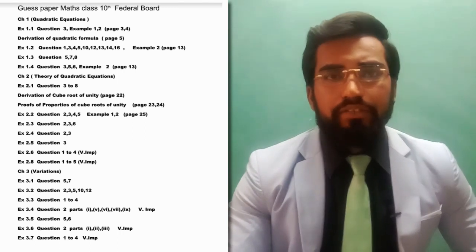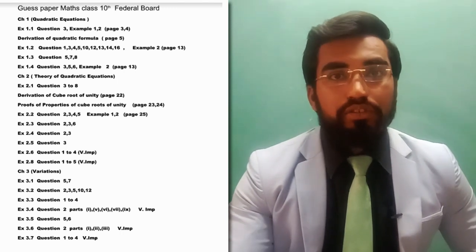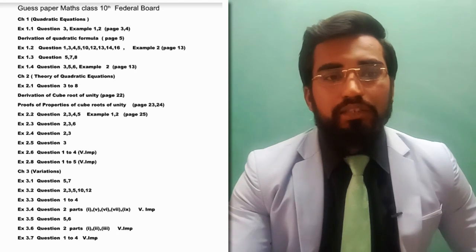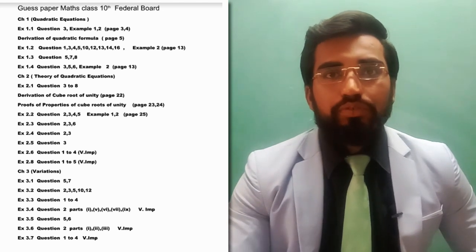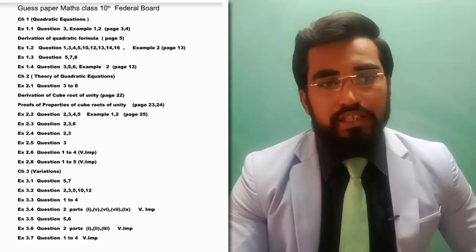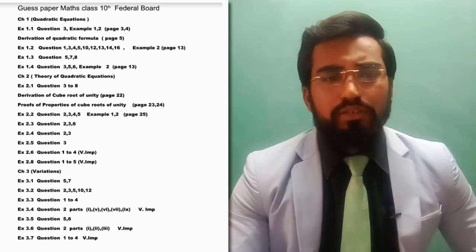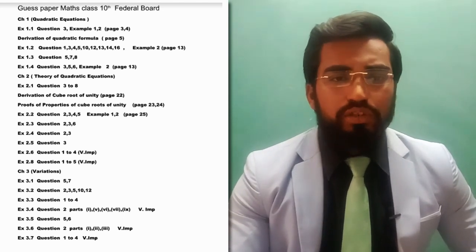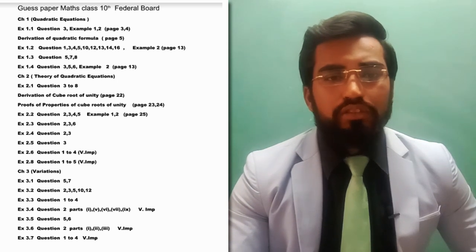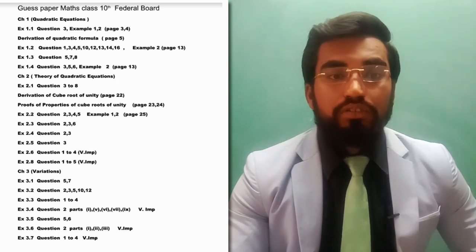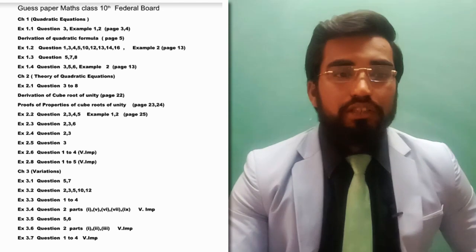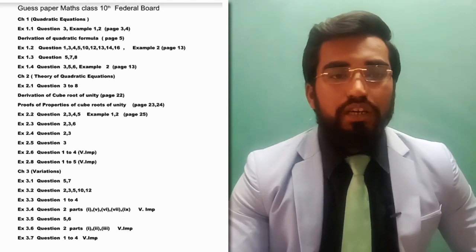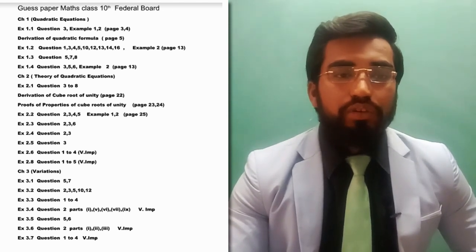Exercise 3.4: important questions are question number two, including parts one, five, six, seven, and nine — these are very very important parts. Exercise 3.5: question number five and six. Exercise 3.6: question number two, including parts one, two, and three. Exercise 3.7: important questions are question number one to four — these are very very important for the board exam.